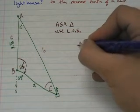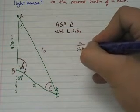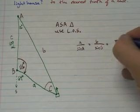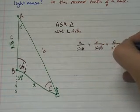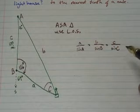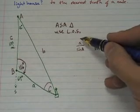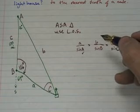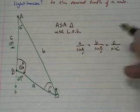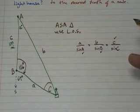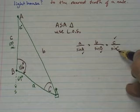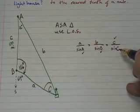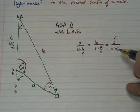I write the law of sines. A over sine A equals B over sine B equals C over sine C. And I look at what I'm trying to find. I'm trying to find side A. I know angle A. I know angle B. And I know side C. And I also know angle C because I know angle A, B, and C have to add up to 180 degrees.